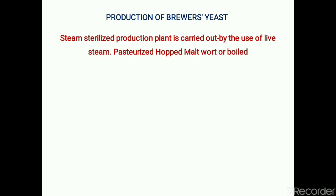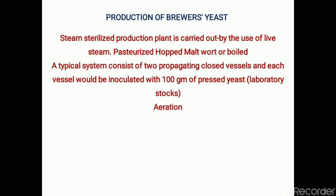For production of brewer's yeast, a steam-sterilized production plant is used in which pasteurized hop malt or boiled malt is added, as it contains all the essential nutrients required for brewer's yeast. A typical system consists of two propagating closed vessels; the fermentation vessel is inoculated with 100 grams of pressed yeast as inoculum from a laboratory stock, followed by continuous aeration at a temperature of 20 degrees Celsius.